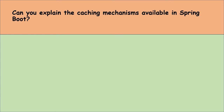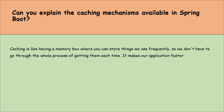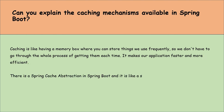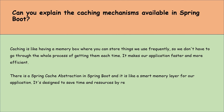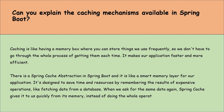Can you explain the caching mechanism available in Spring Boot? Caching is like having a memory box where we can store things we use frequently so we don't have to go through the whole process of getting them each time. It makes our application faster and more efficient. There is a Spring cache abstraction in Spring Boot — it's like a smart memory layer for our operations, designed to save time and resources by remembering the results of expensive operations like fetching data from a database. When we ask for the same data again, Spring cache gives it to us quickly from its memory instead of doing the whole operation again.